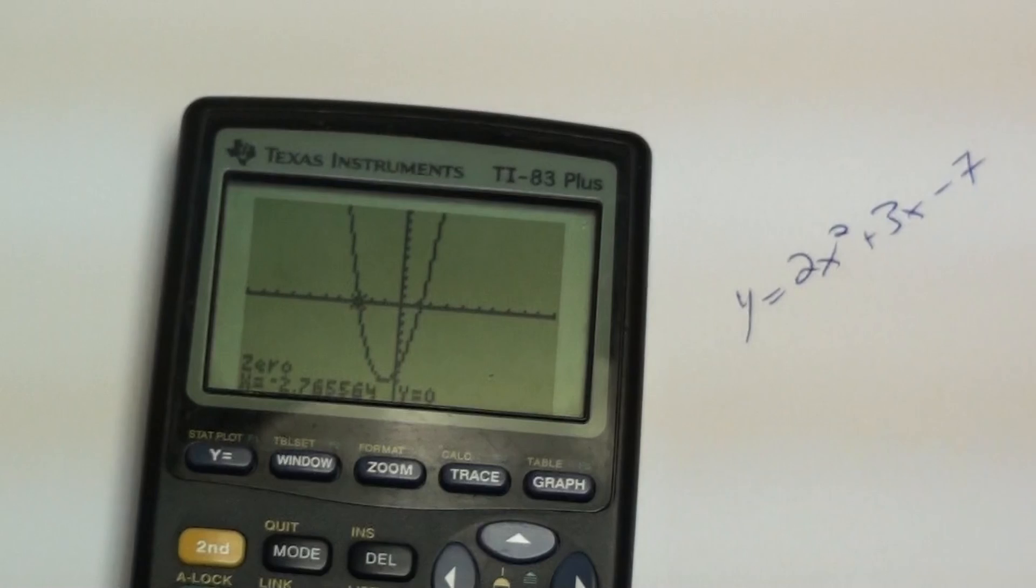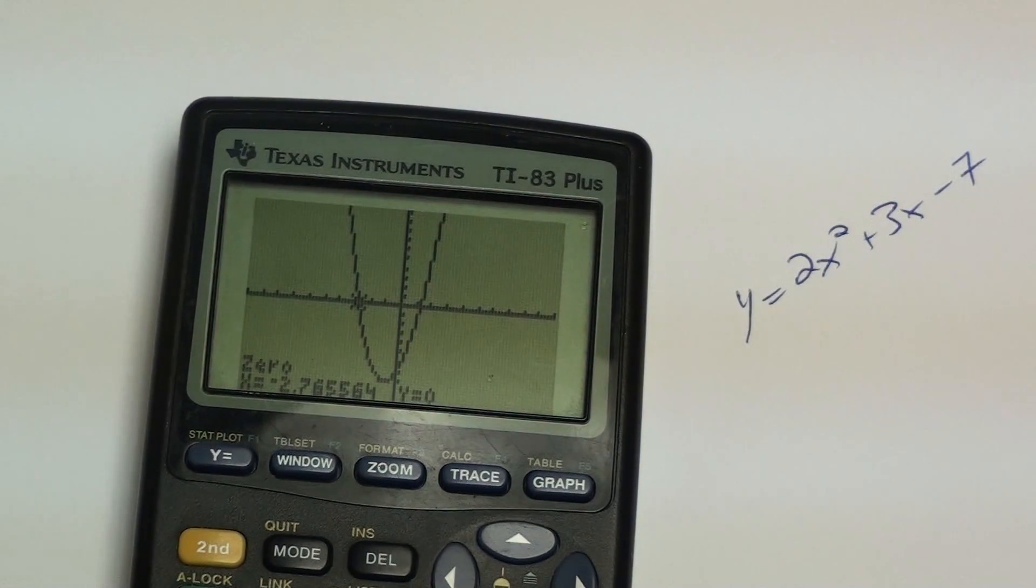You had to do left bound, enter. Right bound, enter. Guess, enter. So a short little video on how to use a graphing calculator to find the x-intercepts, also known as the roots and zeros. Thank you very much.